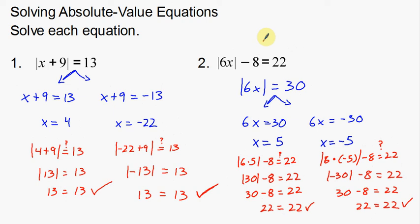To summarize: first, you've got to split the equation. Your first split is the equation as you see it without the absolute values. The second split keeps the left side the same but changes the sign on the right side — positive to negative or negative to positive. Also, before splitting, you must get the absolute value by itself and the numbers on the other side — like when we added 8 to both sides in example 2. Thank you.